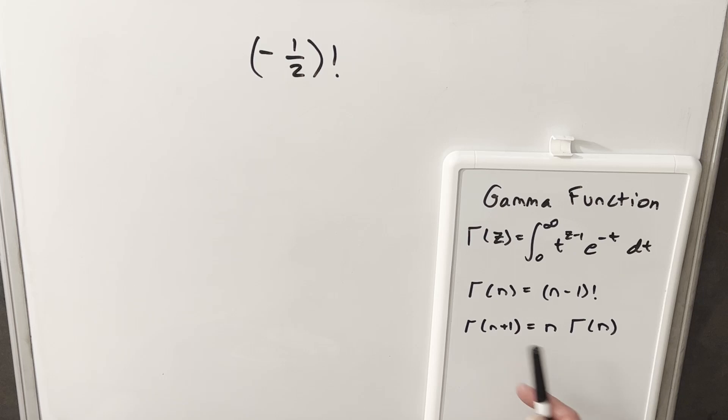So for example, if you were looking at like gamma of five, if our n is five, then that's the same thing as four factorial. And this integral here would give that value if we plugged a five in for the z here, that integral would give us the same value as four factorial or 24.